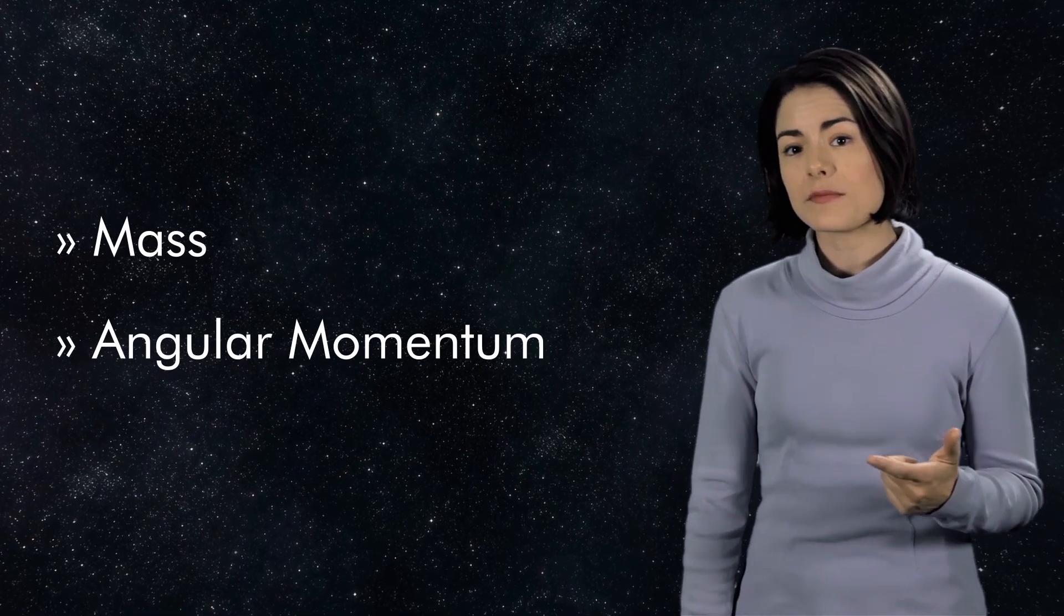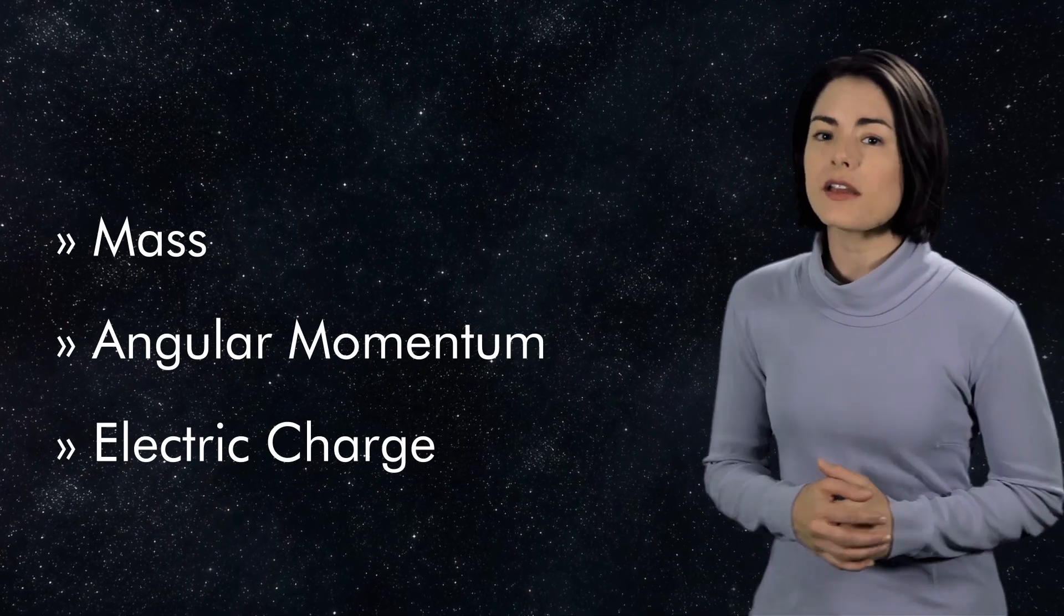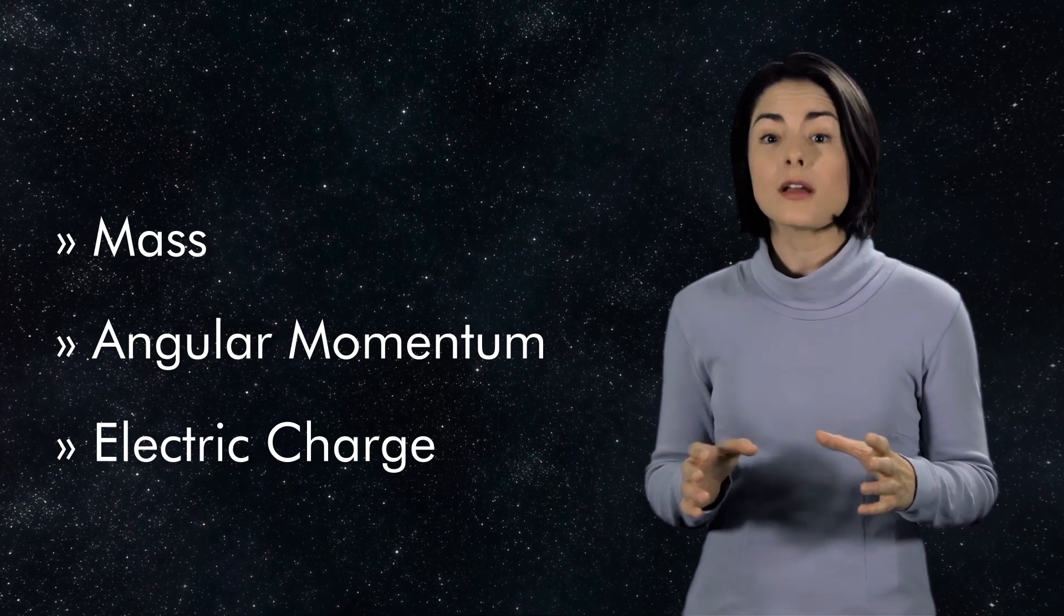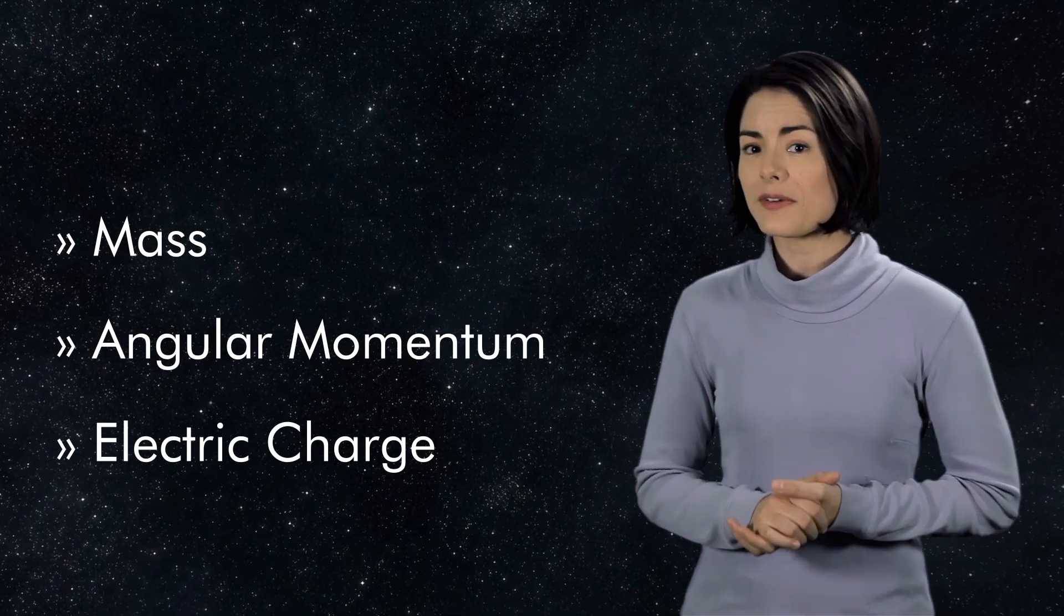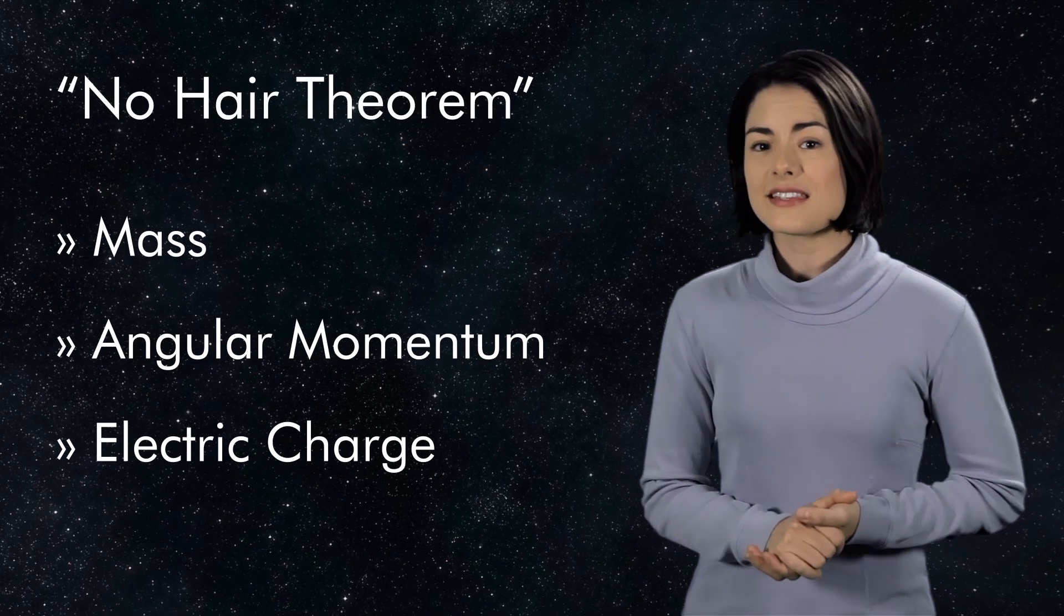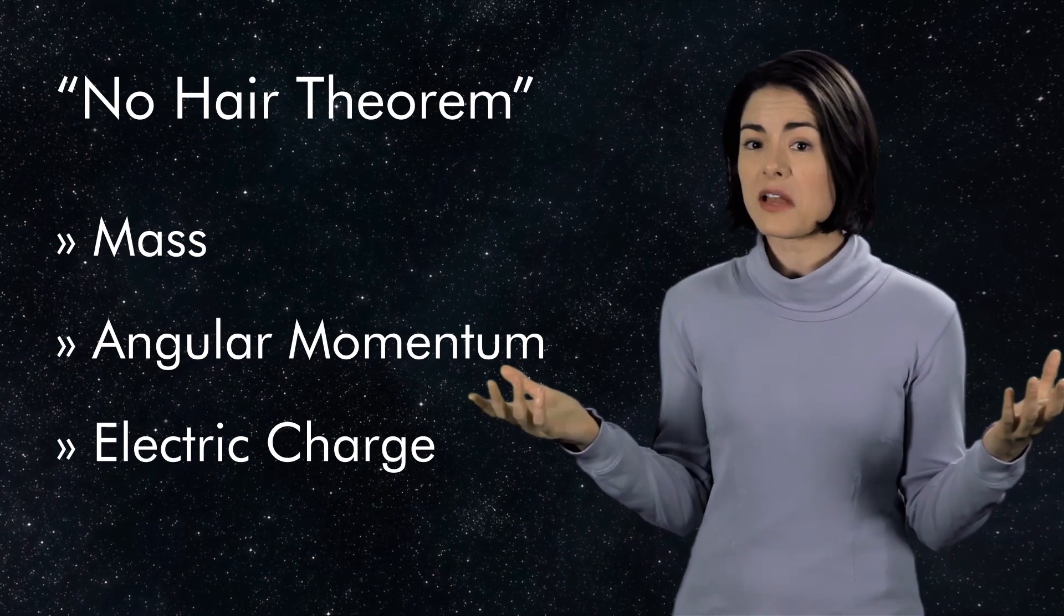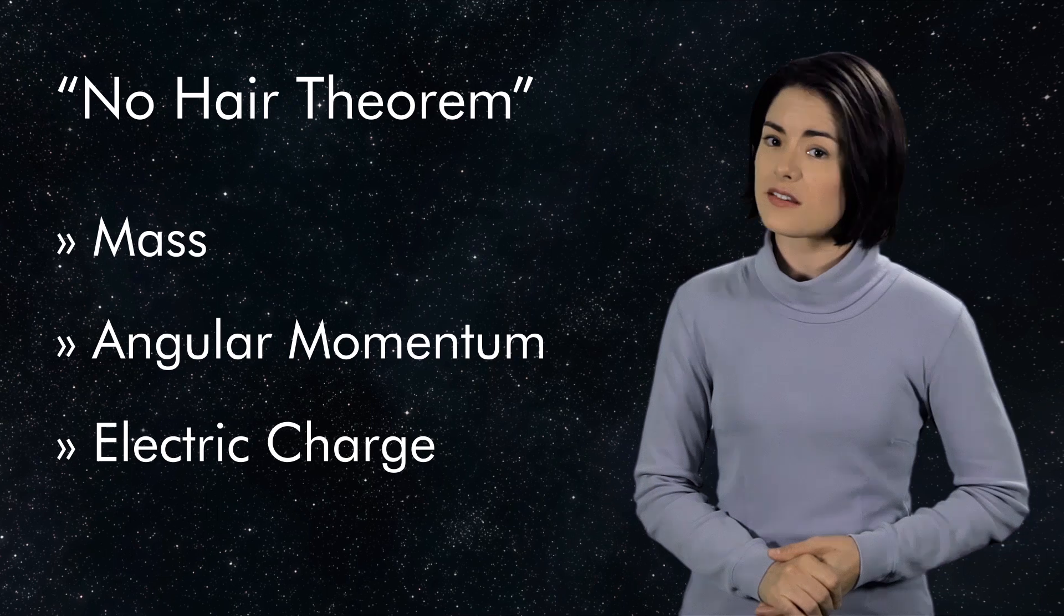There are three fundamental properties of a black hole we can measure. Mass, angular momentum, and electric charge. It is believed that once you know these three values, you can completely describe the black hole. This result is humorously known as the no-hair theorem, since other than these three properties, black holes have no distinguishing characteristics. It's not a blonde, brunette, or a redhead.